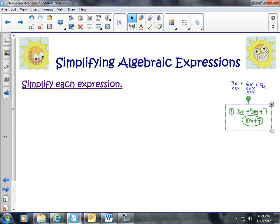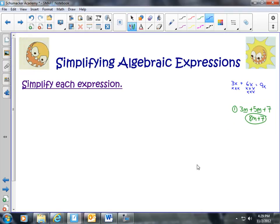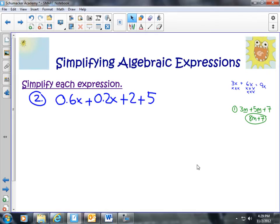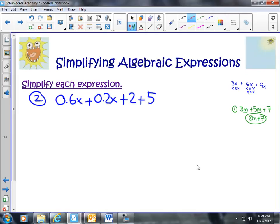Let's go ahead and try another one. Let's say, in this case, we have 0.6x plus 0.2x plus 2 plus 5. In this case, we have a couple sets of like terms. We have 2 and 5 can be added together to get 7.